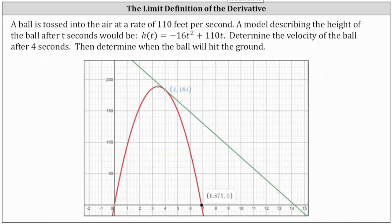Before we go, let's take a look at a graph. The red parabola is h of t, the height function. We can see the point on the graph where t equals 4 seconds, and the height at 4 seconds is 184 feet. The slope of this green tangent line gives us the velocity at 4 seconds — the slope of this green line is negative 18, which represents the velocity of negative 18 feet per second. The x-intercept on the right of 6.875 represents the ball hitting the ground, which happens after 6.875 seconds. I hope you found this helpful.